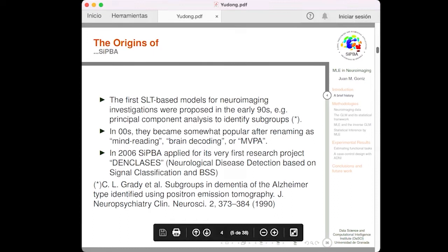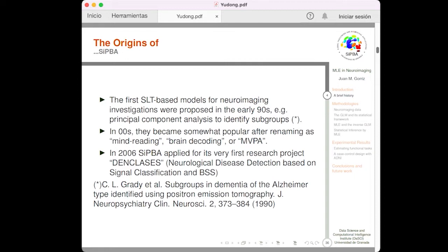The first use of machine learning methods in neuroimaging date from the early 90s. In this paper, by Greedy et al., they employed principal component analysis to classify subgroups in Alzheimer's disease. In the beginning of the 21st century, these methods became popular after renaming them as mind-reading, brain-decoding, or multivariate pattern analysis. Well, as a footnote, I would like to say that we started our research in 2006 with a project entitled DENCLASSIS, that stands for Neurological Disease Detection Based on Signal Classification and Blind Source Separation.